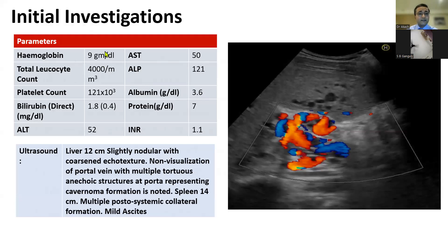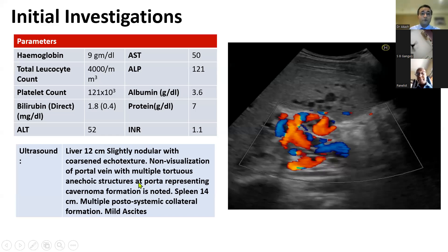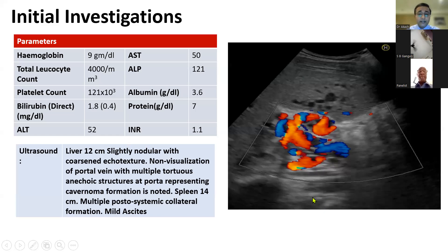His initial investigations show anemia and thrombocytopenia. Liver functions — bilirubin, albumin, and INR — are relatively preserved. Ultrasound shows a slightly nodular liver with coarse echotexture, based on which he was labeled as cirrhosis from outside. But looking at the details, you find non-visualization of the portal vein with multiple tortuous echo-dense structures at the porta, a large spleen, multiple collaterals, and mild ascites.